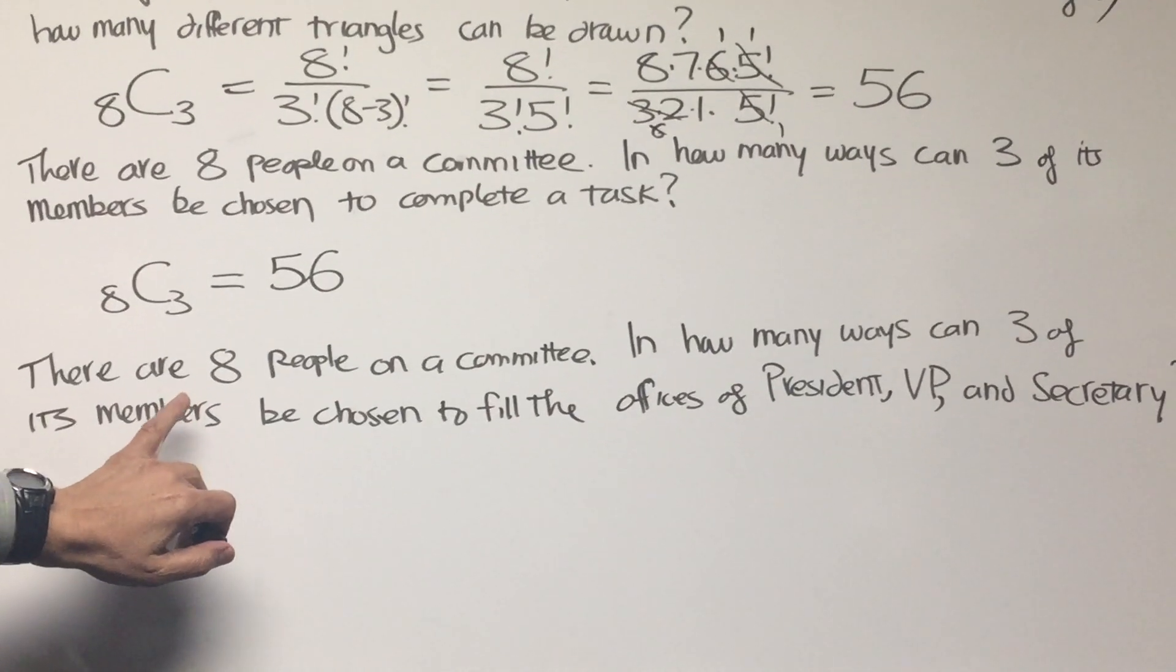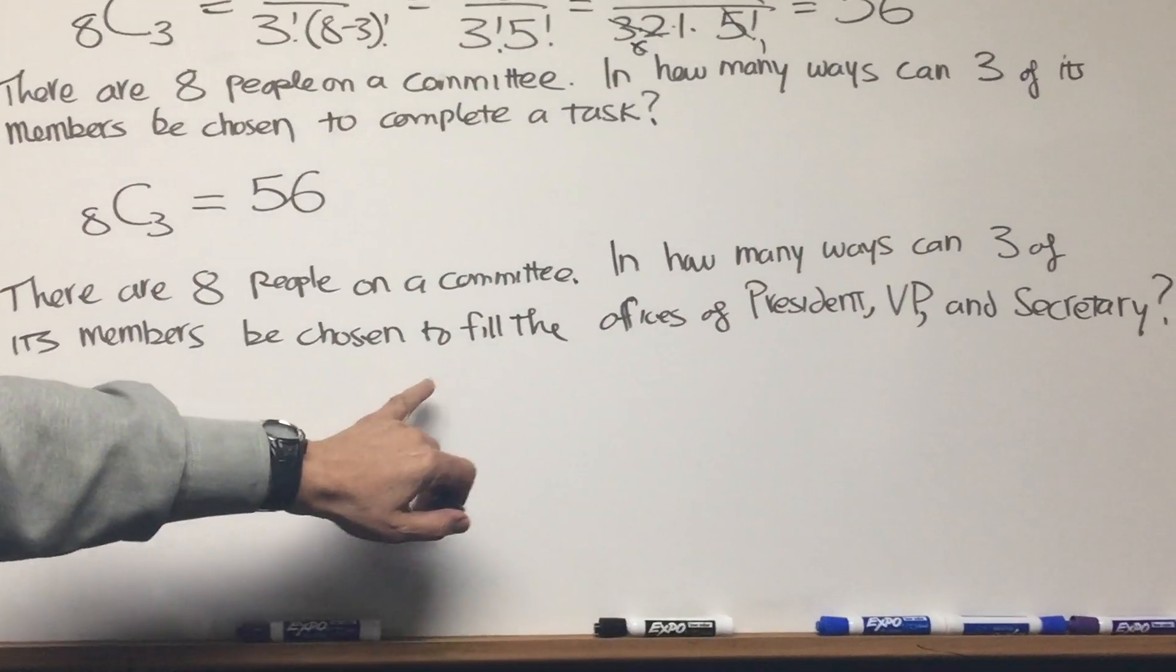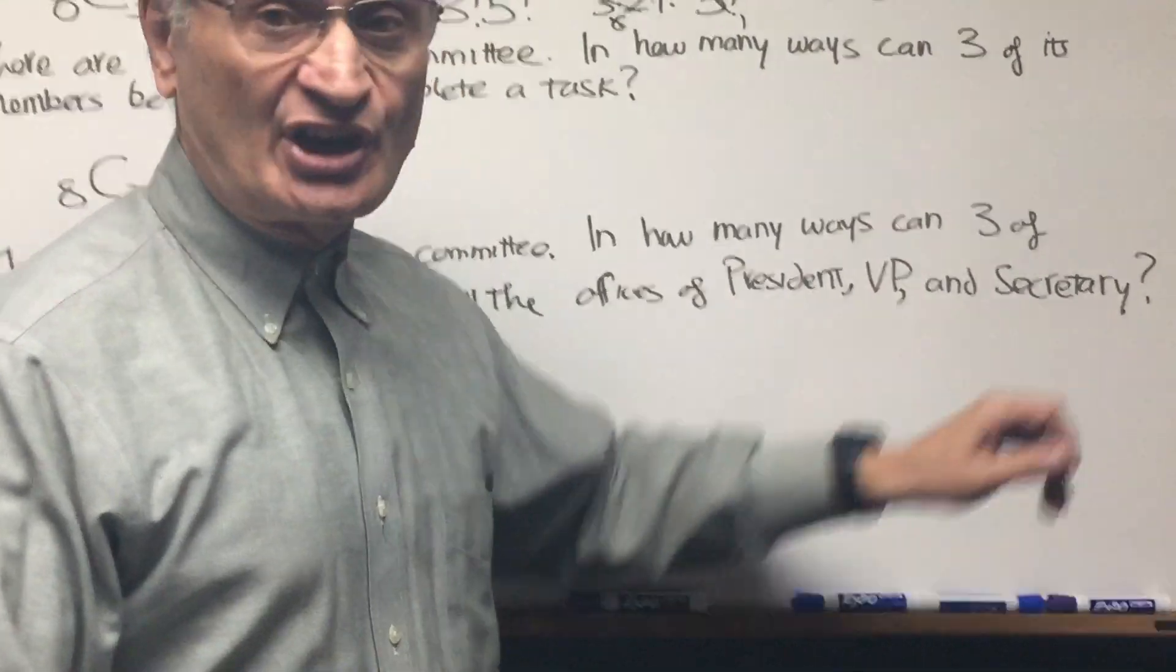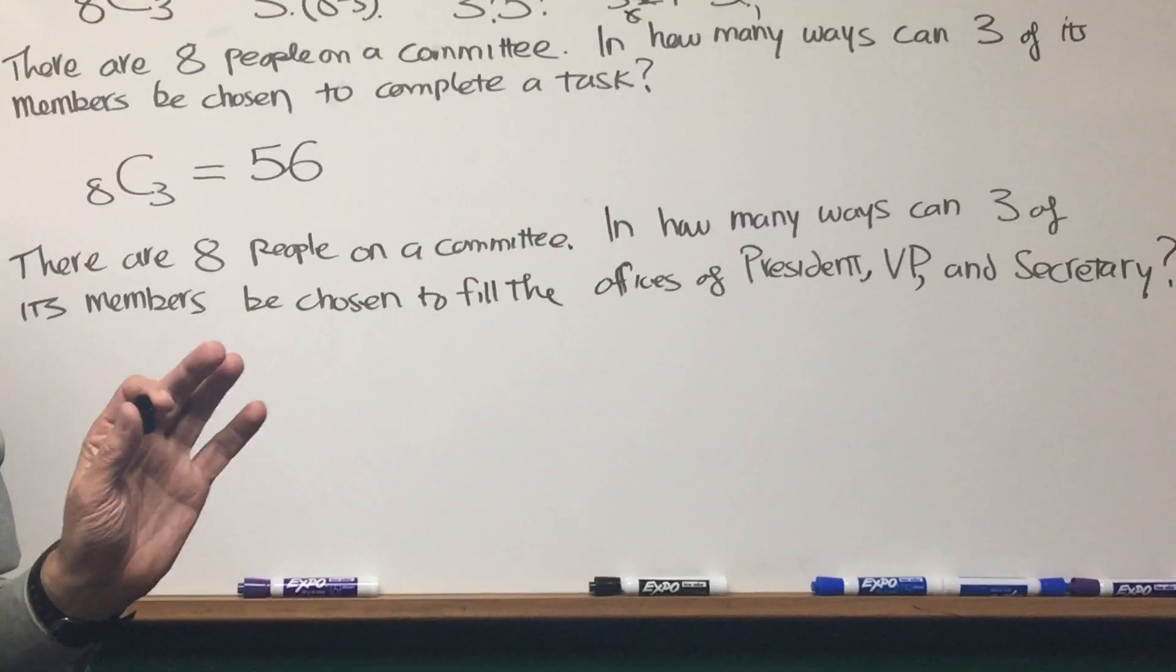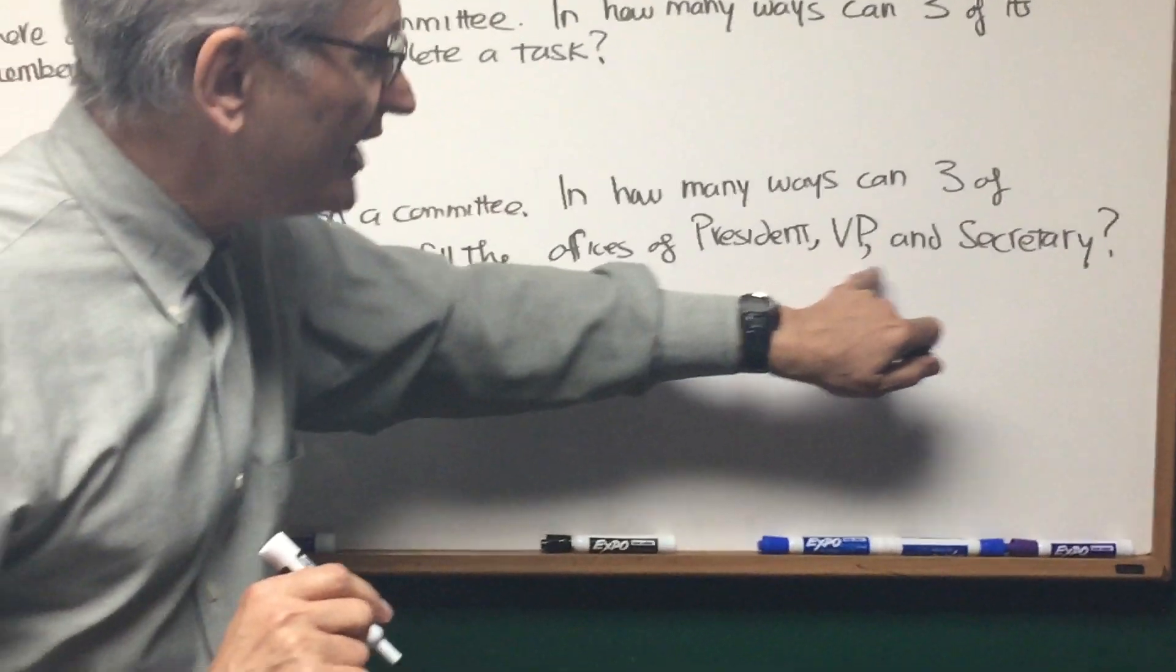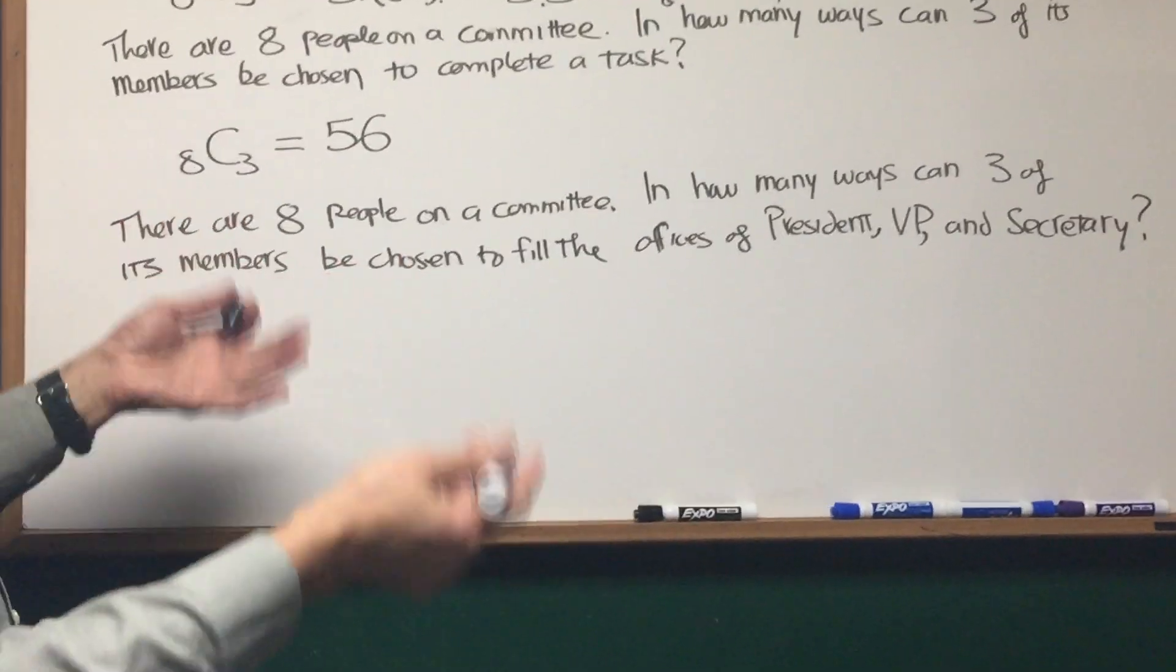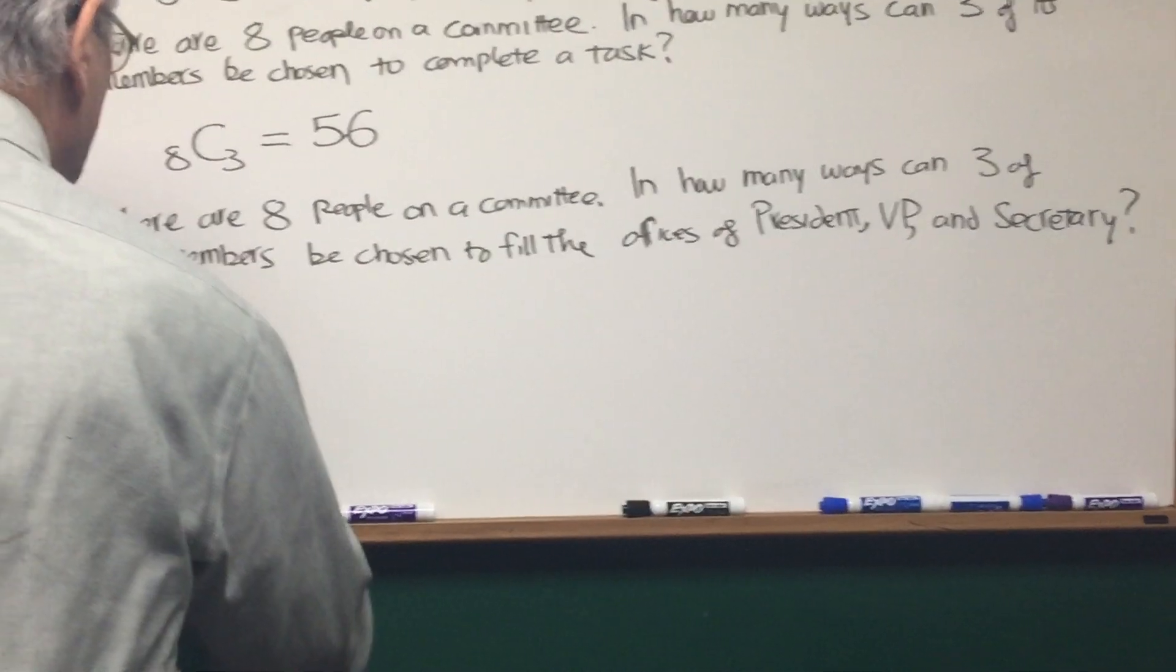And finally, here we have this. There are eight people on a committee. How many ways can three of its members be chosen to fill the offices of president, vice president, and secretary? Oh, okay, so now order is going to count. Order is going to be important because we've given assignments. We've assigned the names to each one of the three positions. So it's not going to be the combination formula that we want to use. We want to use the permutation formula.